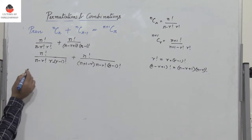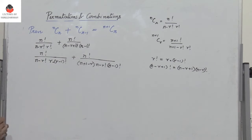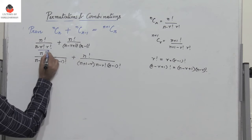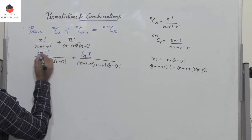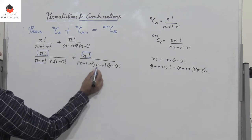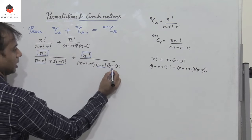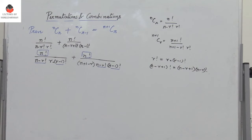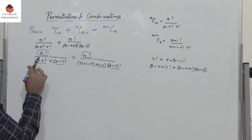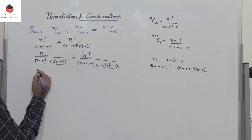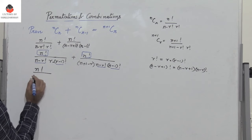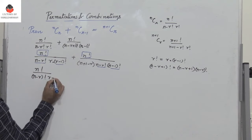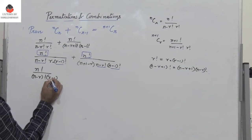Now, what is common? We observe that N factorial is common to both expressions, and so are (N minus R) factorial and (R minus 1) factorial. Taking these three terms outside as common, we have N factorial divided by (N minus R) factorial into (R minus 1) factorial.